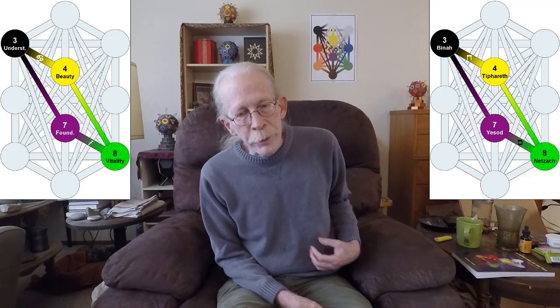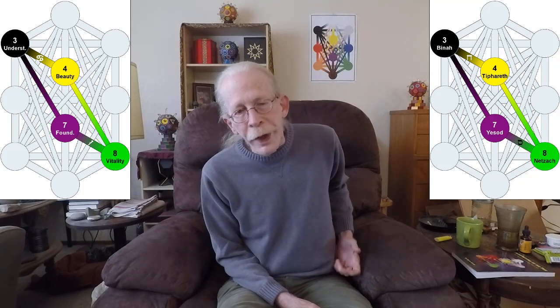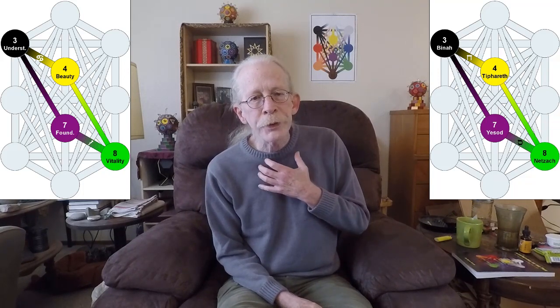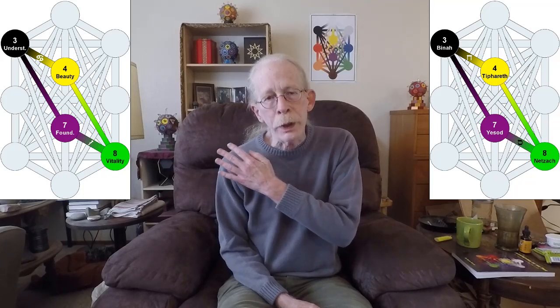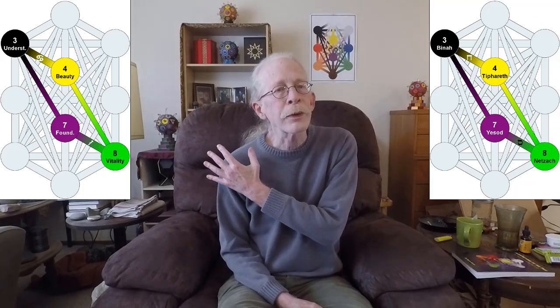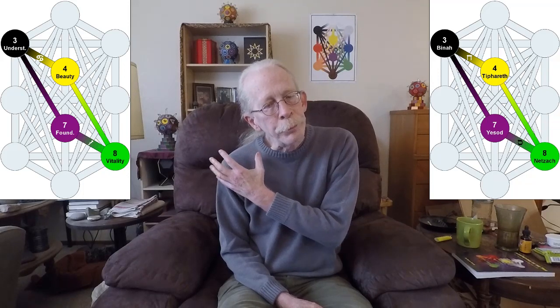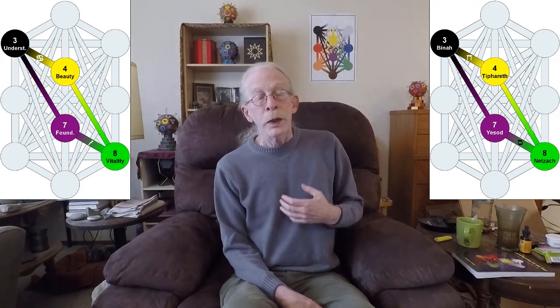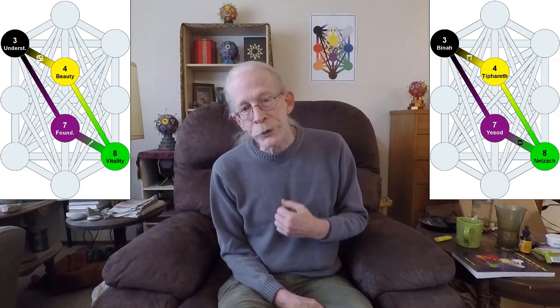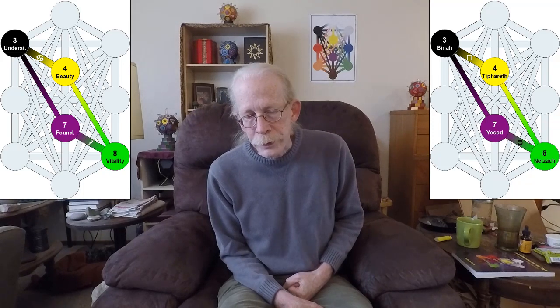The second gate is a quadrangle. It begins in Yesod, takes Samek down to Metzach, then the hidden path up to Tiferet. Then we go from Tiferet up to Bina along the path of Cheth and Cancer, and then Bina straight down to Yesod, and back around. The most important part of this gate is that passage from Bina down to Yesod.